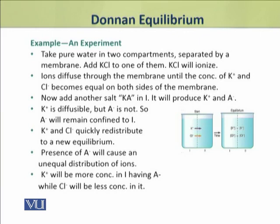At this stage, we shall add another salt with a non-diffusable anion — let us call it KA. It will also dissociate and produce ions: potassium ion and anion A. The potassium ion is diffusable, but anion A is not, so A will remain confined to compartment number 1.